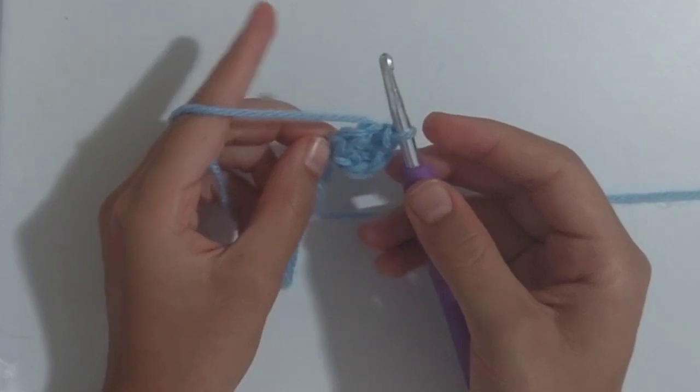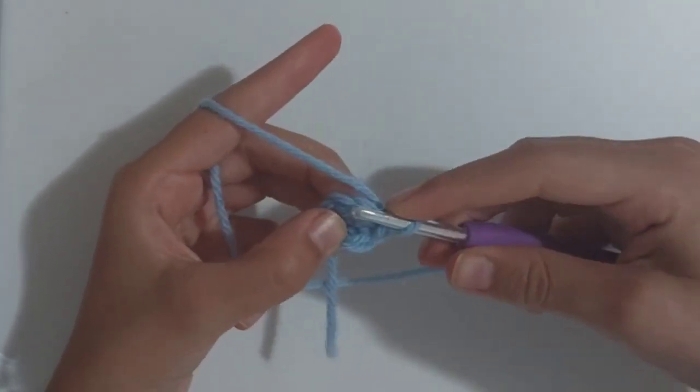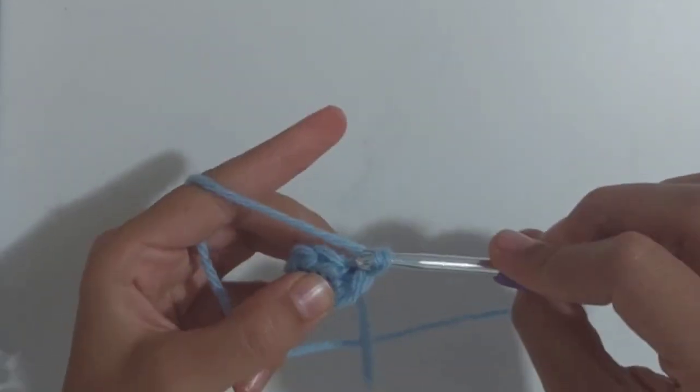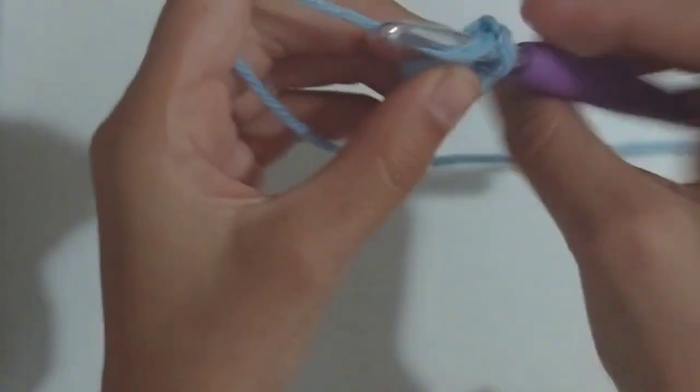To continue making your circle grow wider you are going to have to make sure you do two stitches in each stitch. So for example here I'll be doing two single crochets in each stitch.